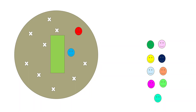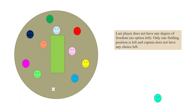As all players are placed one by one, for the last player, the captain does not have any degree of freedom — no option is left. Only one fielding position remains and the captain has no choice. So for the last player, the degree of freedom is zero. This means the degree of freedom is equal to number of players minus one.